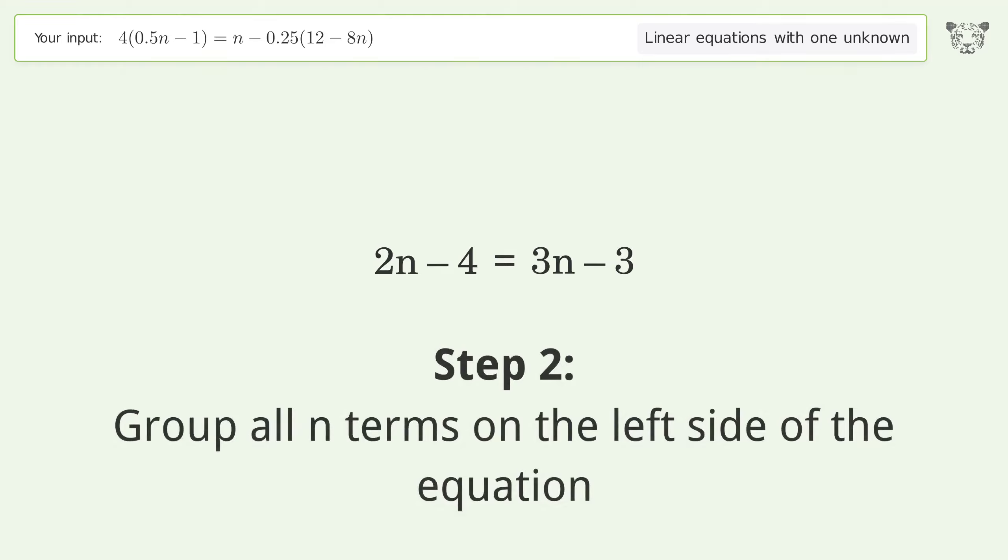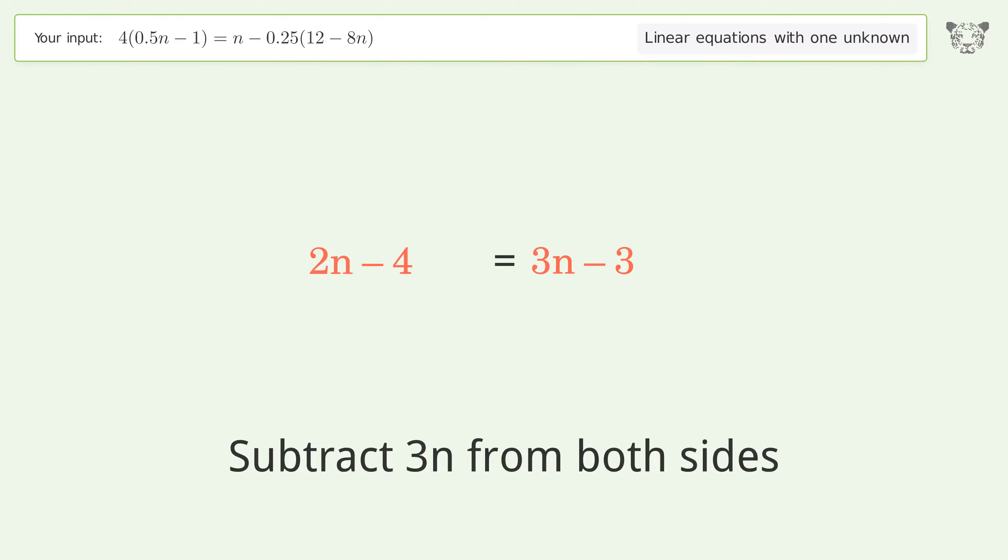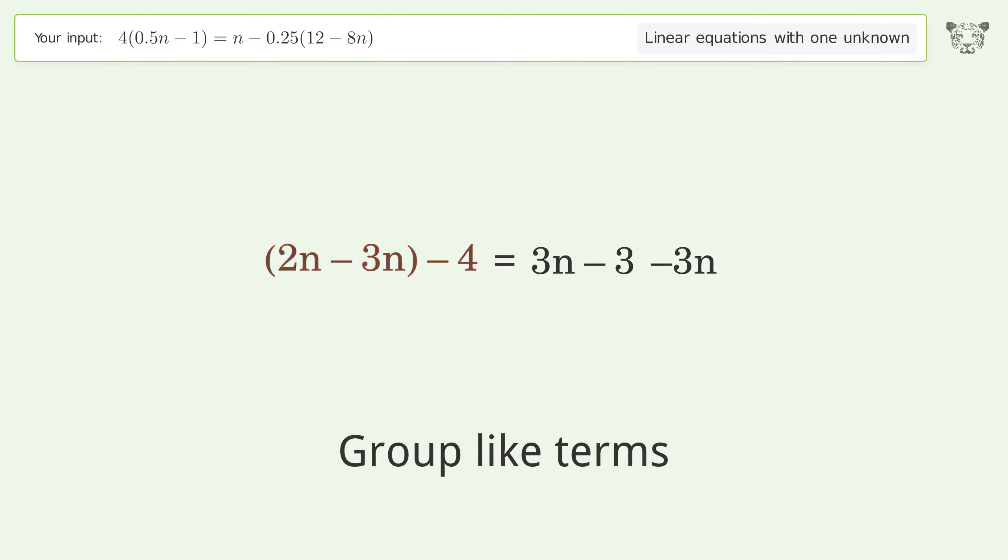Group all n terms on the left side of the equation. Subtract 3n from both sides. Group like terms, simplify the arithmetic.